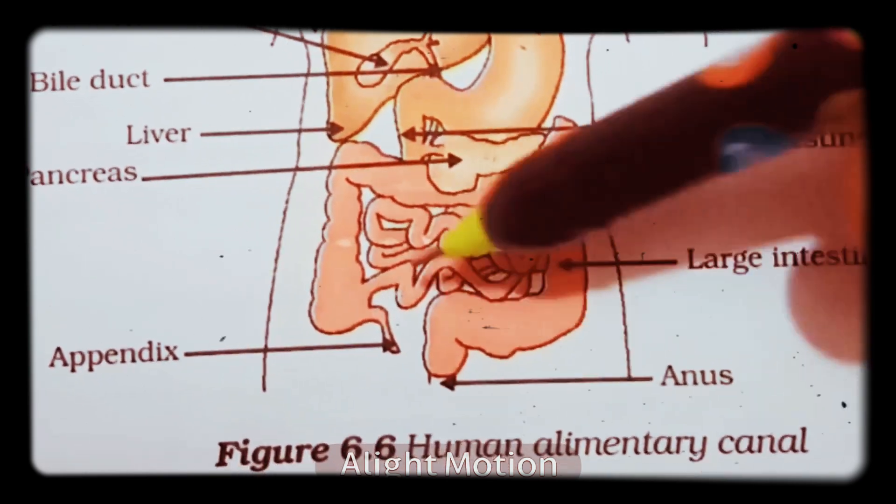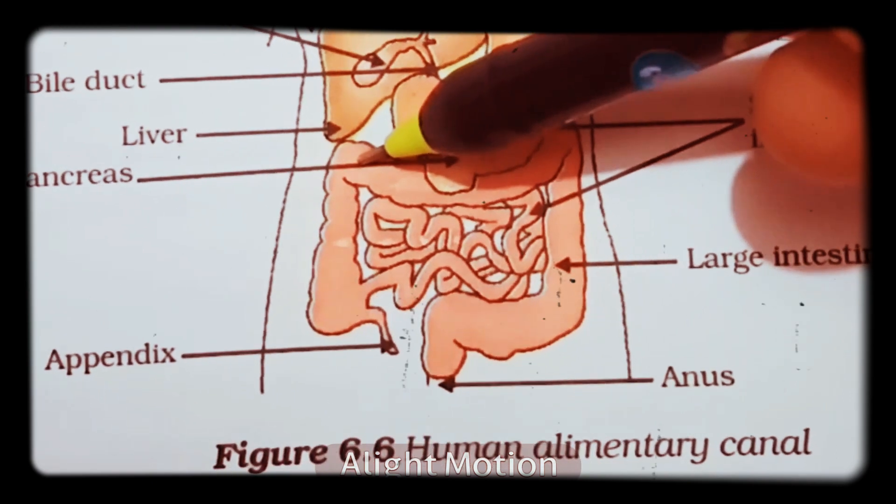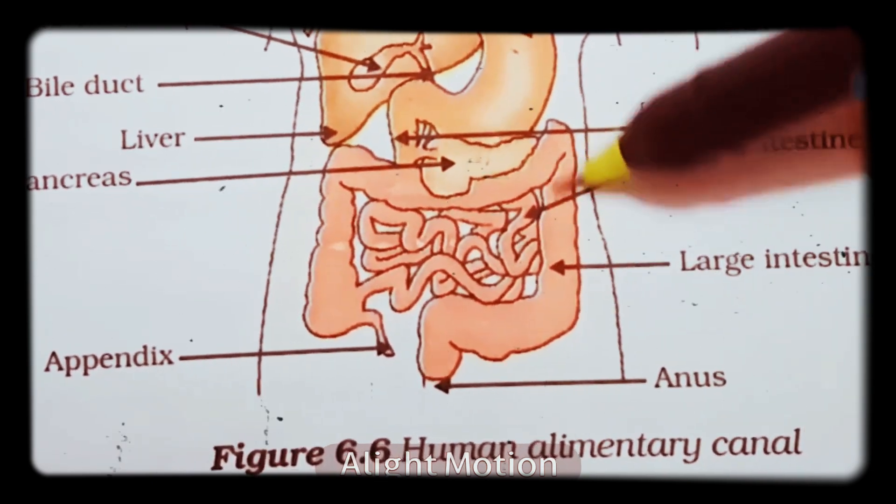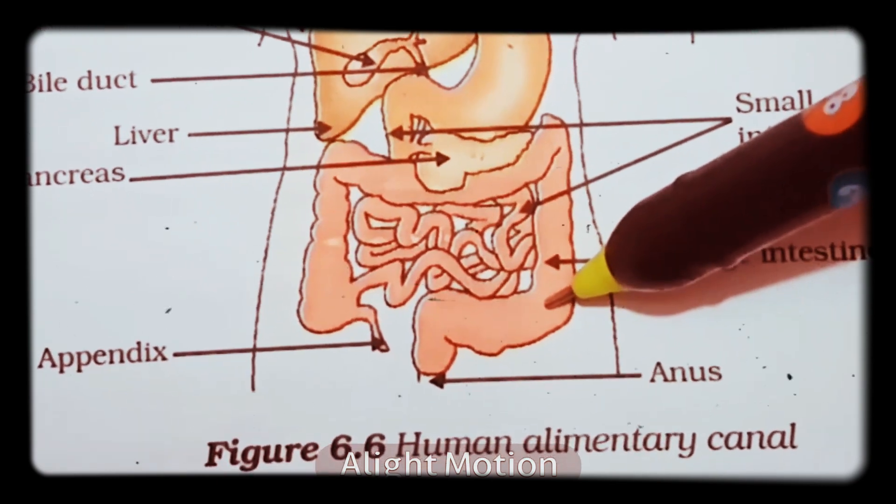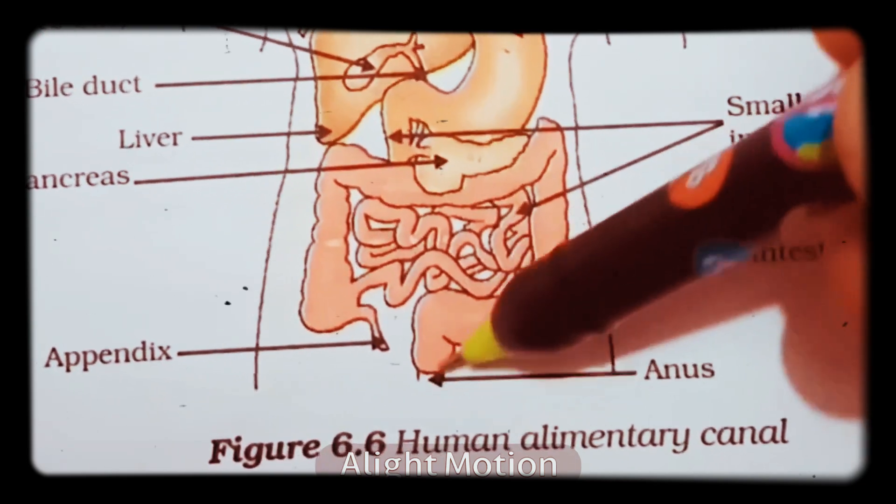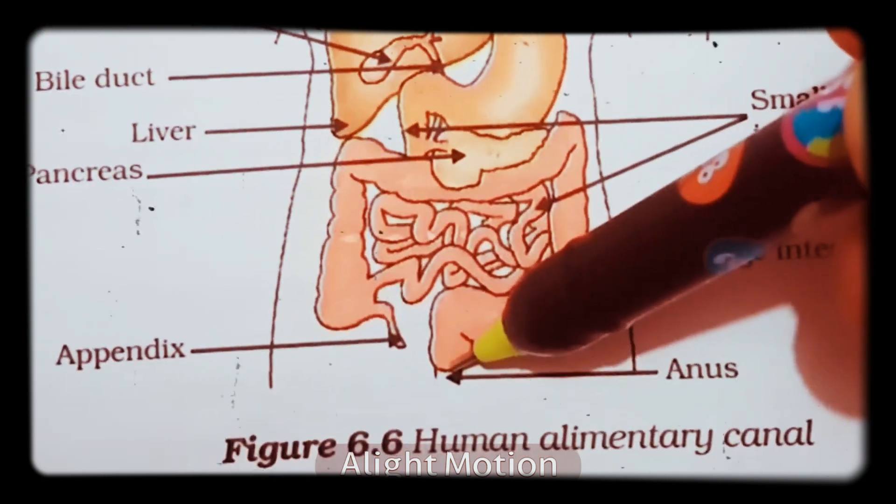The large intestine has three parts: ascending which runs upward, transverse in the middle region, and descending which runs downward. Then this connects with the bag-like structure called the rectum, and then a small opening is present which is called the anus, which is controlled by muscles called the anal sphincter.